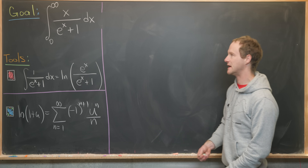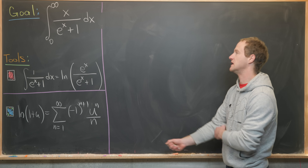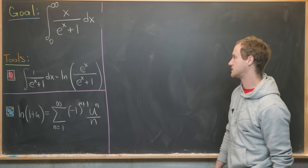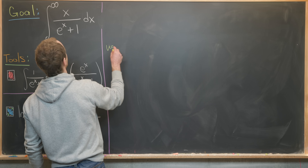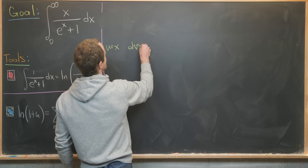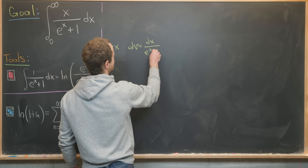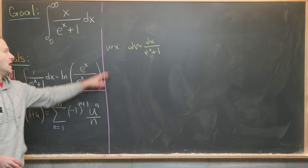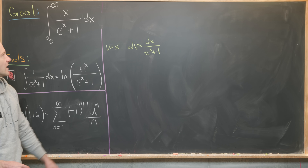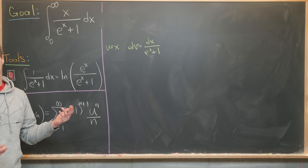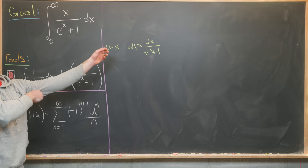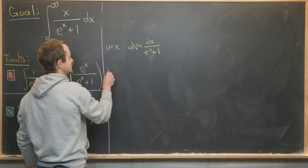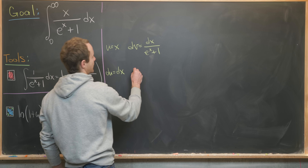Now we're ready to move on to our main goal: the integral from zero to infinity of x over e to the x plus one. We'll use integration by parts. Let u equal x, making dv equal dx over e to the x plus one. This is motivated by the fact that taking the derivative of x makes it simpler, while differentiating the other factor would make things more complicated. So du equals dx.